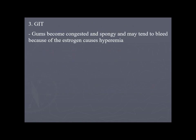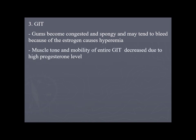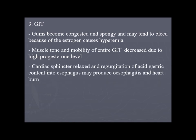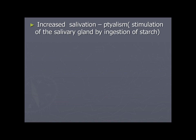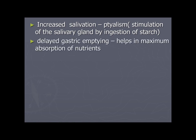Gastrointestinal system: gums become congested and spongy and may bleed due to estrogen-caused hyperemia. Muscle tone and motility of the gastrointestinal tract decrease due to high progesterone level. Cardiac sphincter relaxes; regurgitation of acid gastric content into the esophagus may produce esophagitis and heartburn. Decreased gut motility helps maximum absorption of nutrients but leads to constipation and hemorrhoids. Nausea and vomiting are caused by high HCG levels during early pregnancy. Increased salivation (ptyalism) results from stimulation of salivary glands by starch ingestion.